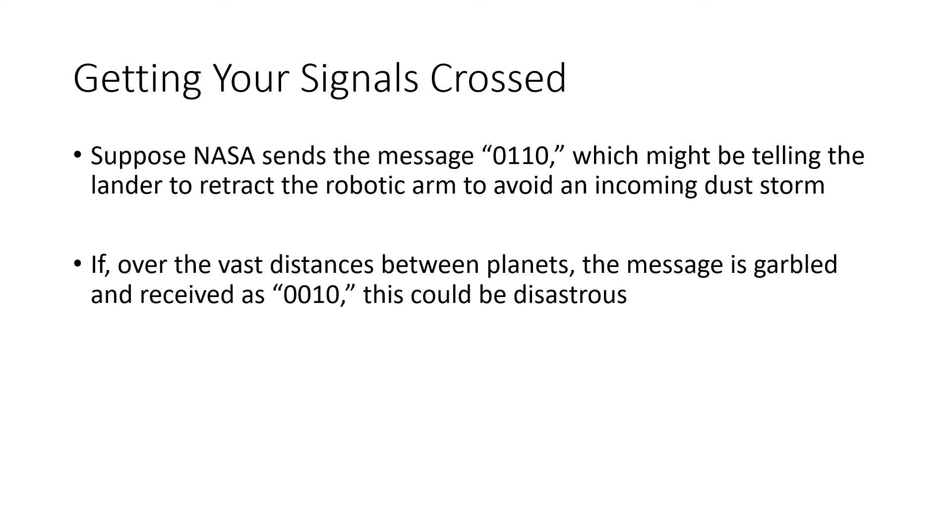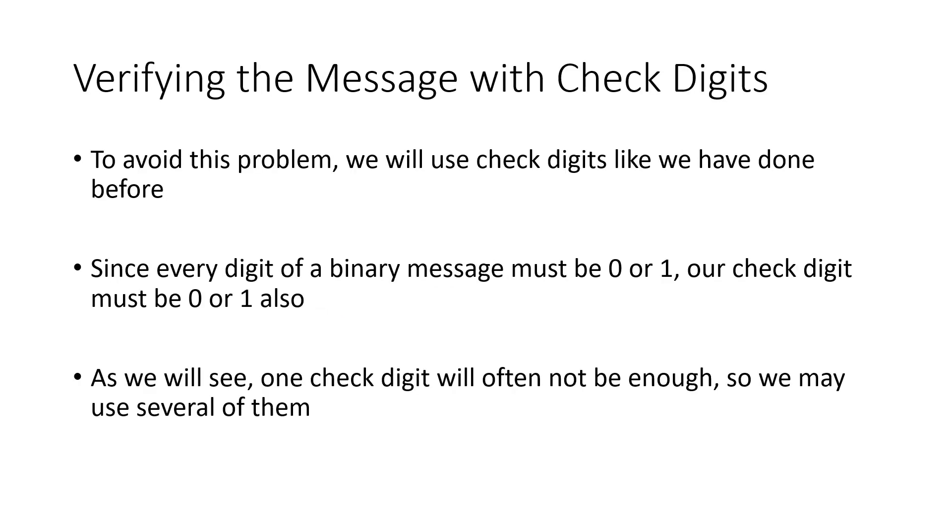But when we get these vast distances between planets, we might send a message that could end up being different from the message that gets received. So here on Earth, we send the message 0, 1, 1, 0, which could be, for example, telling the lander to retract its robotic arm to avoid an incoming dust storm. But then over the vast distances, the millions and millions of miles between planets, the message the lander receives could be 0, 0, 1, 0. And so instead of moving its arm to protect itself from a dust storm, it ends up taking a picture, or it ends up raising the arm even higher, which makes it even more dangerous. So this could be really disastrous.